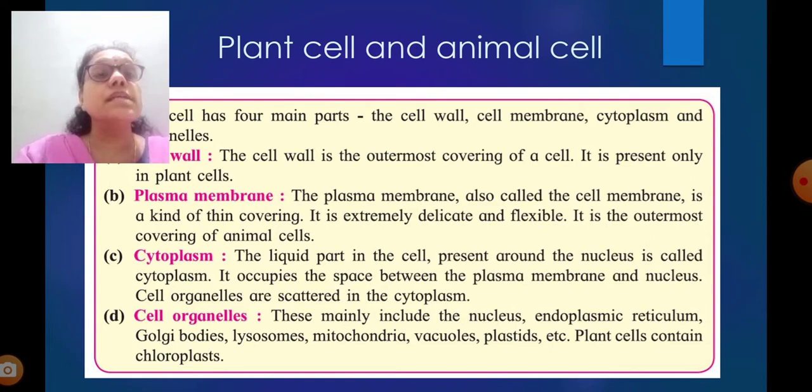Cytoplasm: The liquid part in the cell present around the nucleus is called cytoplasm. It occupies the space between the plasma membrane and nucleus. Cell organelles are scattered in the cytoplasm.